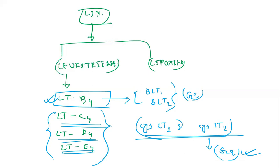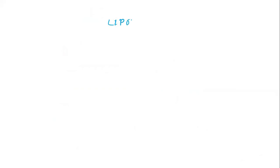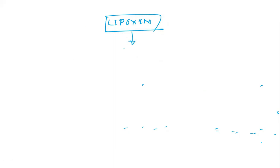Another eicosanoid is lipoxin. Lipoxin is a type of eicosanoid that suppresses or inhibits inflammation.